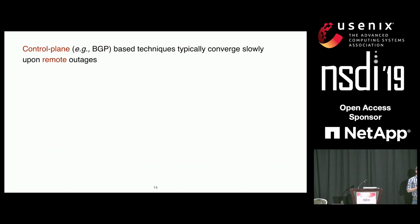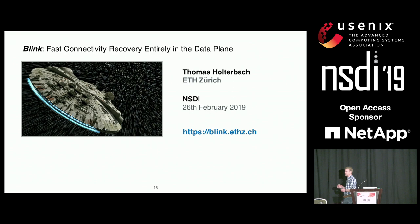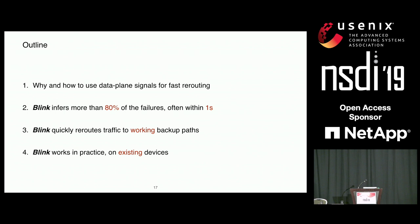Because BGP-based techniques are slow to converge, what about using data plane signals instead for fast rerouting? That is what I will show you today. I will show you Blink — a fast connectivity recovery system which uses data plane signals to quickly reroute traffic upon remote failures. I'll cover: why and how to use data plane signals, how Blink infers failures accurately and often within one second, how Blink reroutes to working backup paths, and that Blink works in practice on existing devices.